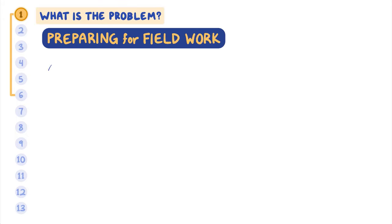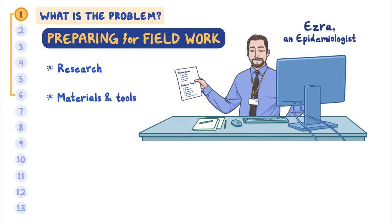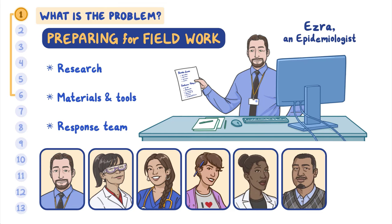Preparing for fieldwork involves doing research. During this investigation, Ezra, an epidemiologist, would research possible causes of gastrointestinal symptoms and generate a list of possibilities, including known foodborne infectious agents and how they spread. Along with research, Ezra would collect the required materials and tools and assemble the appropriate team to conduct the investigation.